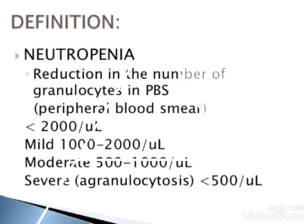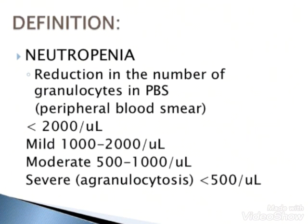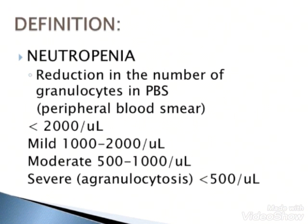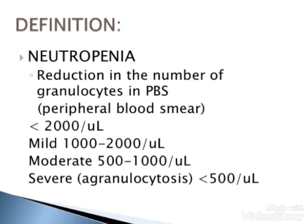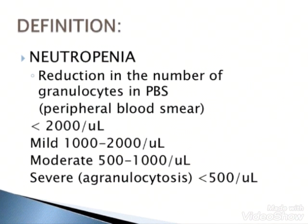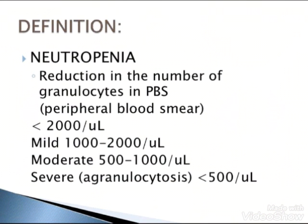The word neutropenia denotes reduction in the number of granulocytes in the peripheral blood smear (PBS). It will be mainly less than 2000 per microliter. In mild state it will be 1000 to 2000, in moderate it will be 500 to 1000 per microliter. The normal count is 1,500 to 8,000 per microliter. If it goes below that, then it will be counted as a disorder.